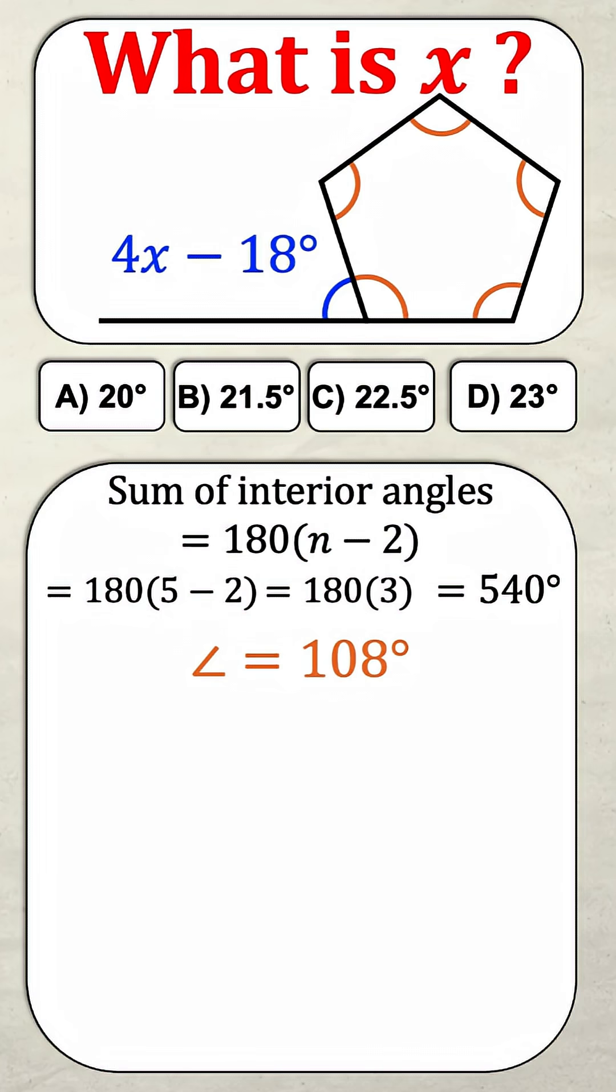Now that doesn't give me the value of x, but what it does do is give me the value of a supplementary angle to the angle given, 4x minus 18. And what's a supplementary angle? Well, it means that the blue angle 4x minus 18 and the orange angle sum up to 180 degrees.